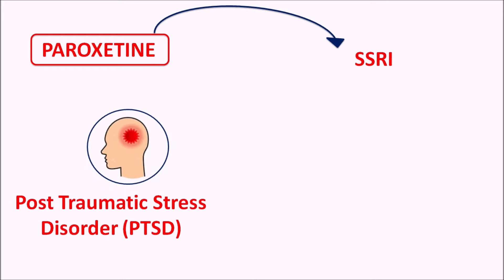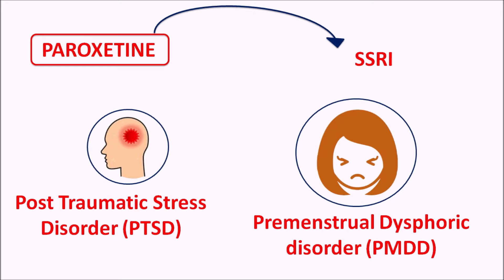Another anxiety disorder is post-traumatic stress disorder — anxiety generated by recalling past stressful events. This anxiety can persist for up to 4 weeks and can be managed by paroxetine. Apart from anxiety disorders, paroxetine can also be used in the management of premenstrual dysphoric disorder (PMDD), an extension of premenstrual syndrome where the woman experiences irritability, anxiety, difficulty in concentration, and mood changes before menstruation.